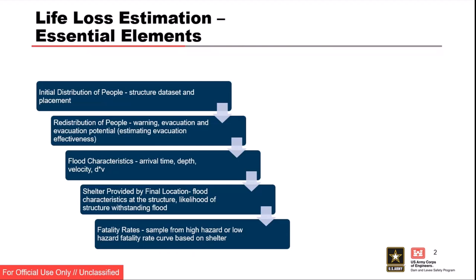Based on those final shelter locations, we're putting people in low hazard or high hazard for each iteration in LifeSim and coming up with an estimate of fatalities. What's the single greatest source of natural variability when estimating life loss? Direct life loss.